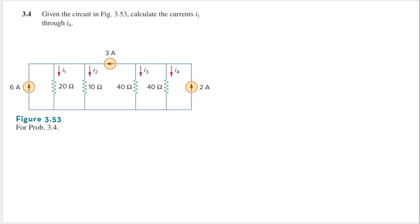Hello, my name is RD and we are going to solve problem 3.4 from Sadiku's book. The question is: given the circuit in figure 3.53, calculate the currents i1 through i4.